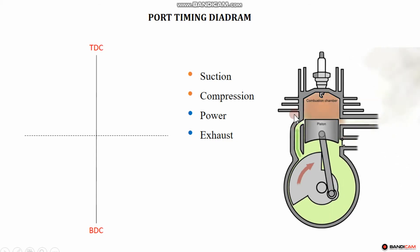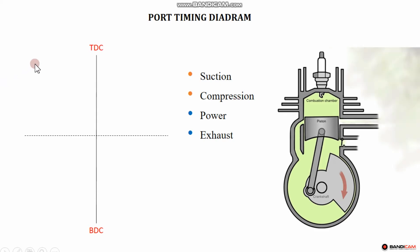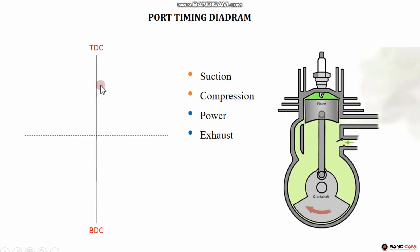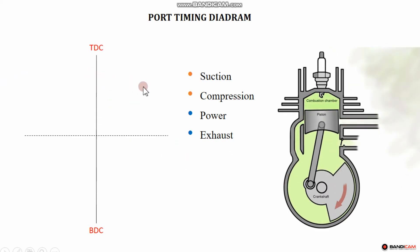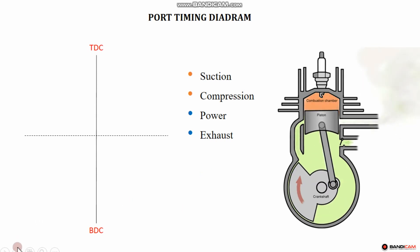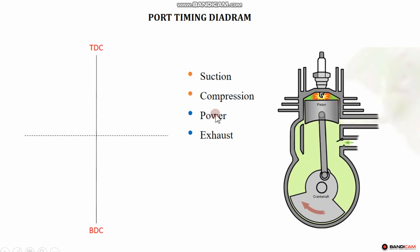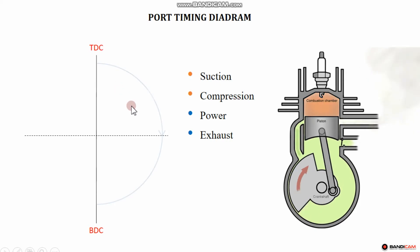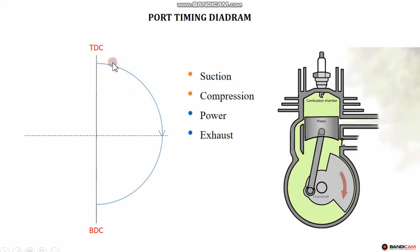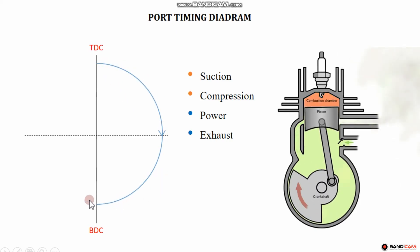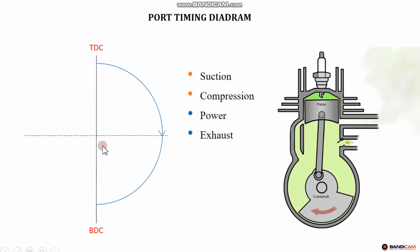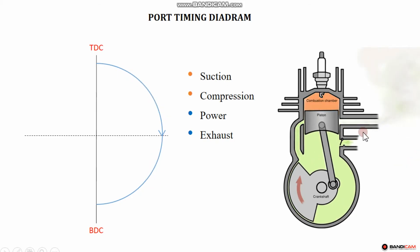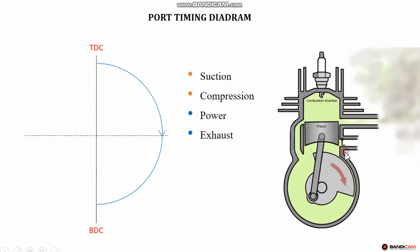There are two segments of piston movement: first is the upward movement, second is the downward movement. When the piston comes up, that is the power and exhaust stroke. When the piston comes down, that is a half revolution. Coming down, the first port to consider is the inlet port.